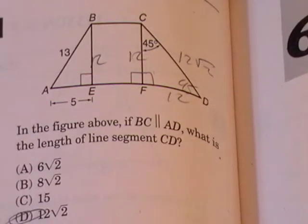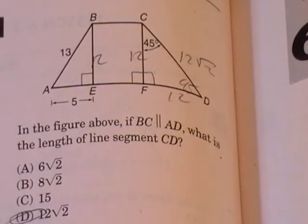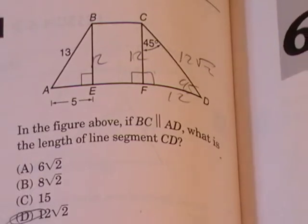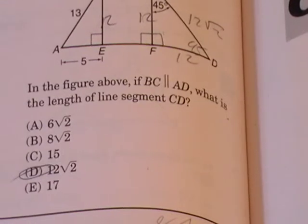This is a special right triangles problem. It reads, in the figure above, if BC is parallel to AD, what is the length of line segment CD? And there are our answer choices.